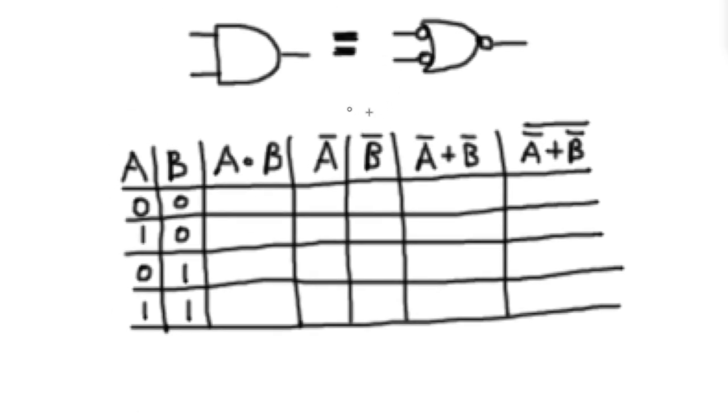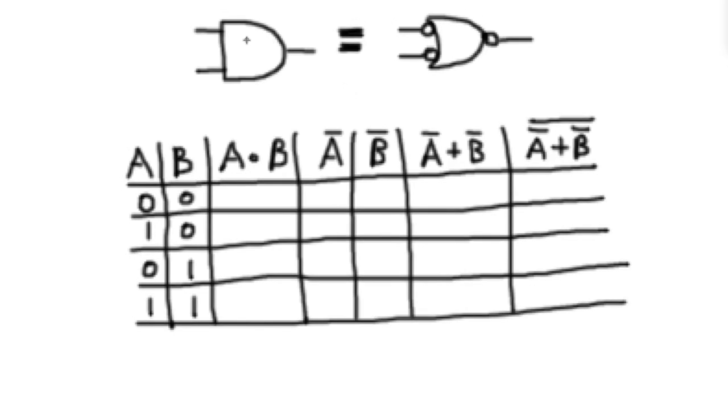If you're not sure what a bubble is, this is a bubble right here. Anytime you see this little circle on the input or an output of a logic gate, that means that line is being inverted. And we refer to that as a bubble. So bubble logic is a trick that we can use to change schematic circuits without actually changing the functionality of a circuit.